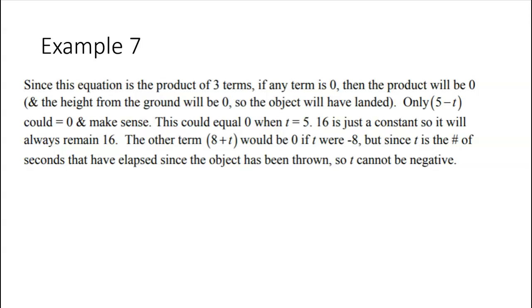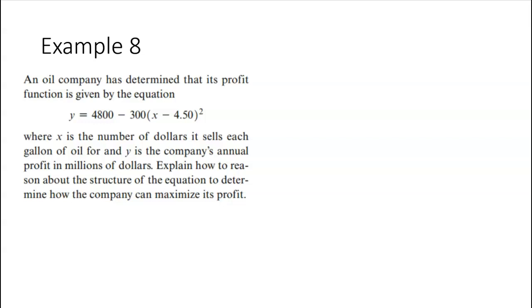Let's do another example. An oil company has determined that its profit is given by this equation, where x is the number of dollars to sell each gallon of oil, and y is the annual profit in millions. Explain how to reason about the structure of the equation to determine how the company can maximize its profit. All right. Maximize its profit. Profit is y. We want the most we can get here.